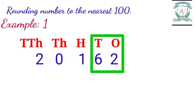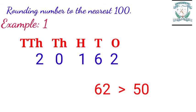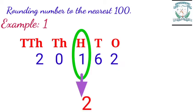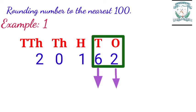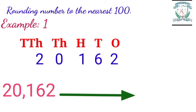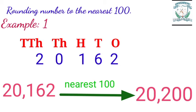If the tens and ones digits together form a number fifty or more than fifty, then the number is rounded to the next hundred. Here 62 is greater than fifty, so the hundreds place will become 2 and the tens and ones places will become zero. So when we round off 20,162 to the nearest hundred, we get 20,200.